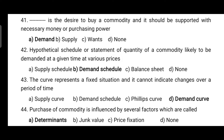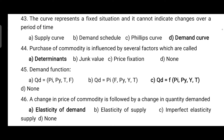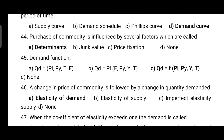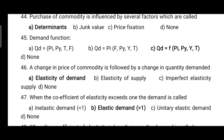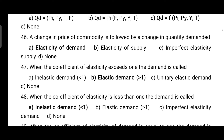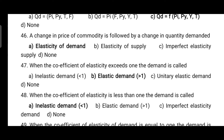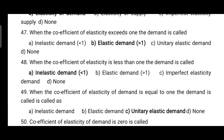Next question: purchase of a commodity is influenced by several factors which are called determinants. The demand function is expressed as Qd = f(Pi, Py, Y, T). Next, a change in price of a commodity followed by a change in quantity demanded is known as elasticity of demand. When the coefficient of elasticity exceeds 1, the demand is known as elastic demand.